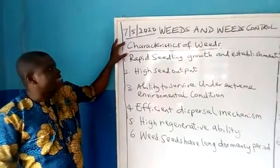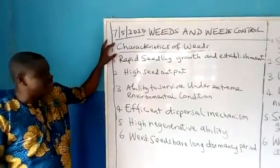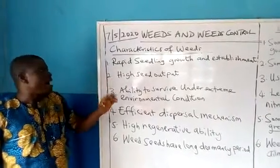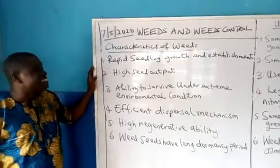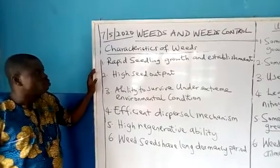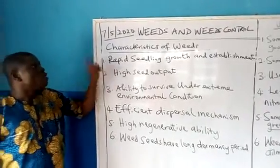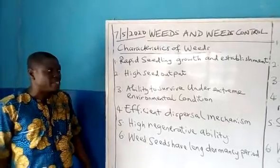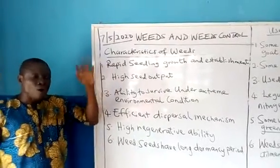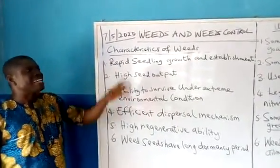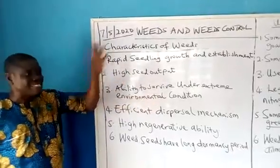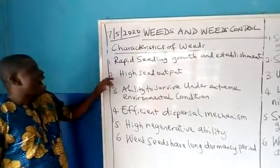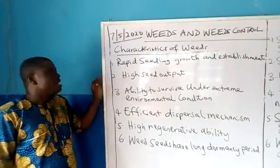Then we will continue with the characteristics of weeds — what makes weeds what they are. One: rapid seedling growth and establishment. Weeds grow extremely fast and rapidly, more than other crops, and they get easily established, giving them an edge over other crops.